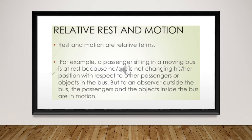Rest and motion are relative terms. Sometimes it happens that a body is at rest with respect to some other body but at the same time it is in the state of motion with respect to another body. For example, if a person is sitting in a compartment of a moving train, all the things around him in the compartment appear stationary, but for a person standing on the platform, all the things in the compartment are in the state of motion.